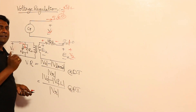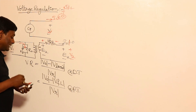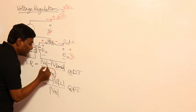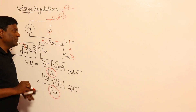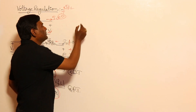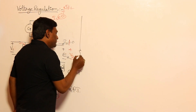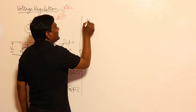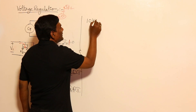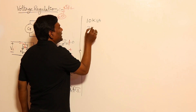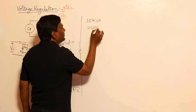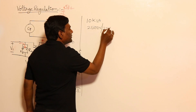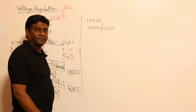Now, one more clarity about rated voltage. Consider the transformer we examined previously: 10 kVA, 2500 volts by 250 volts. The question is — is it a power transformer or a distribution transformer? The same nameplate details can refer to either, depending on how it is used.